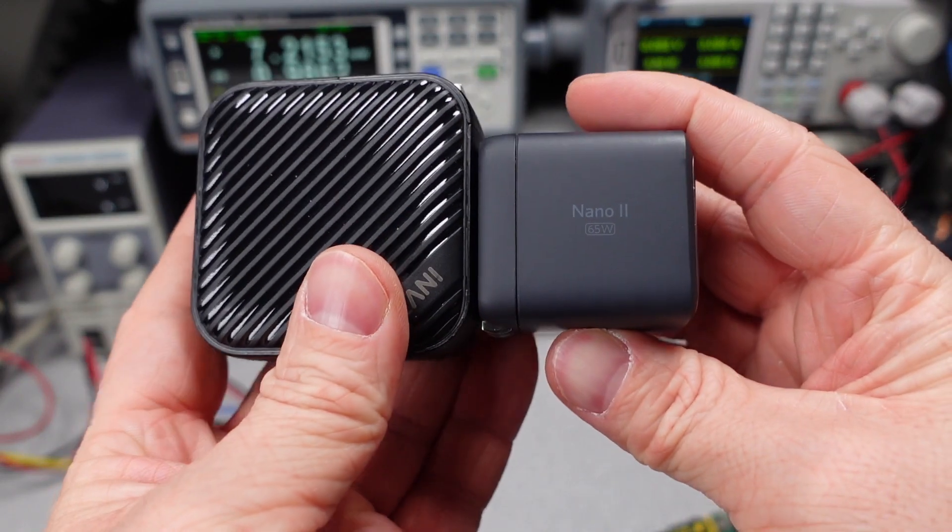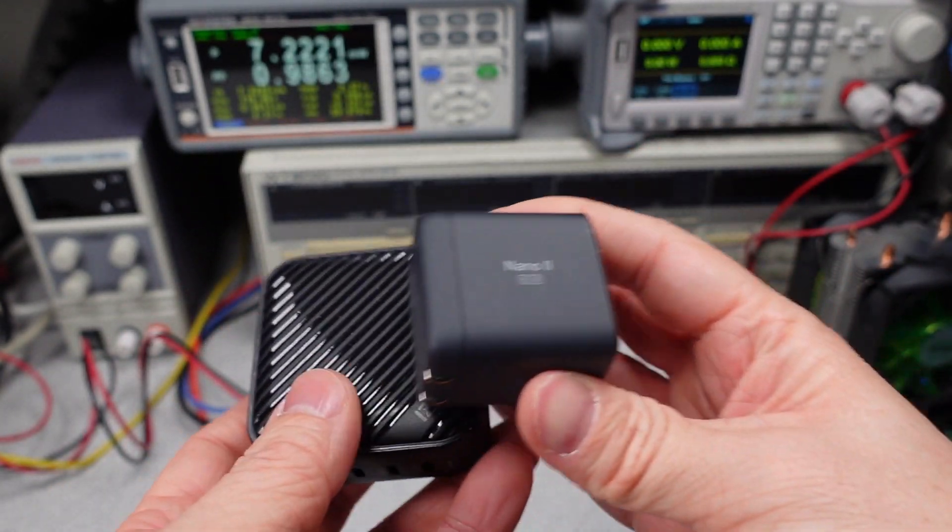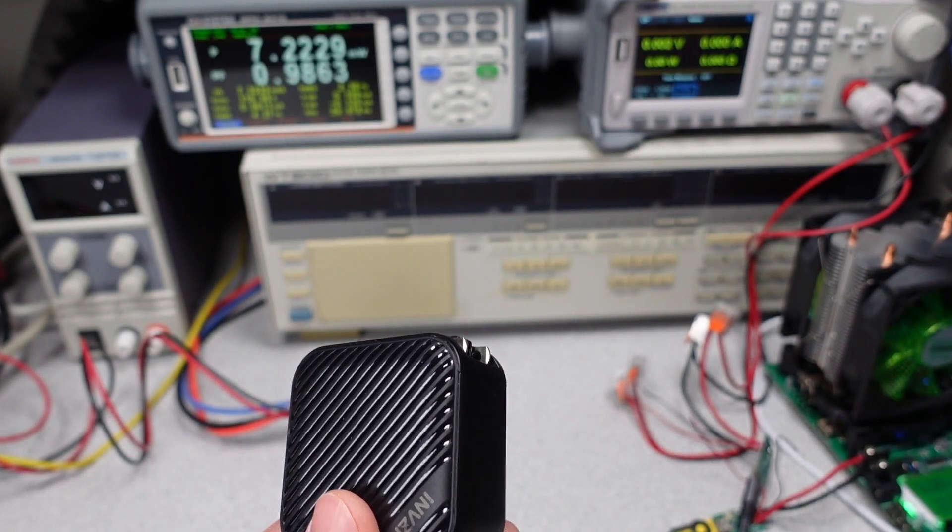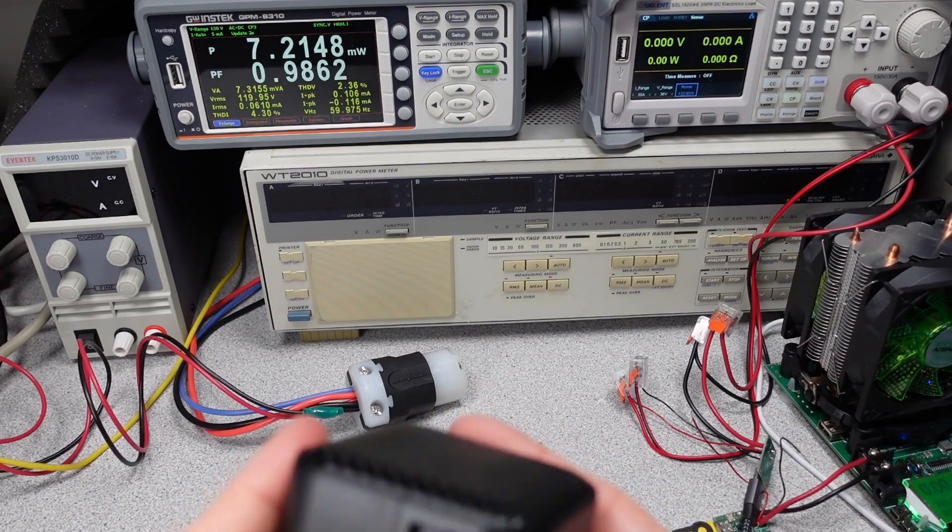I also got the Anker Nano 2 65 Watt. I mean they're just kind of different, but it's very small for a 100 Watt power adapter. I will give them that. World's smallest? I don't know.